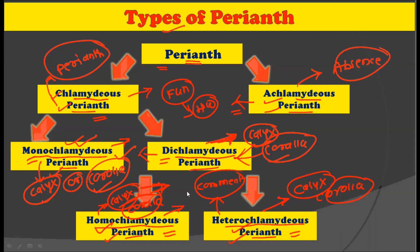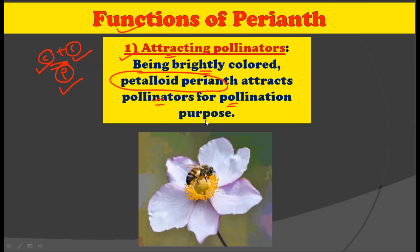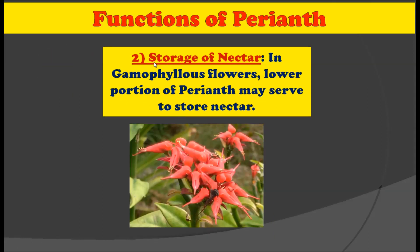Now let us see the functions of the Perianth. Since Perianth is a combination of calyx and corolla, the functions performed by calyx as well as corolla are also performed by the Perianth. The first function is attracting the pollinators — being brightly colored, the petaloid Perianth attracts pollinators for pollination purposes.